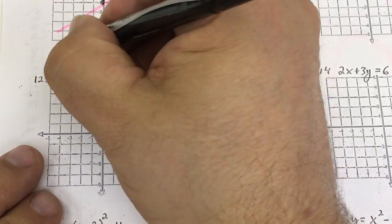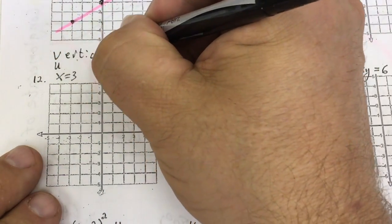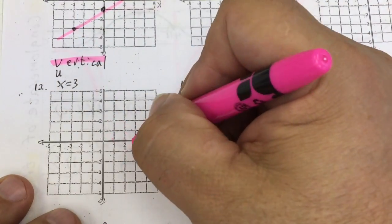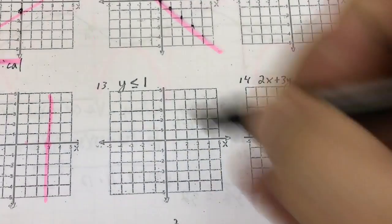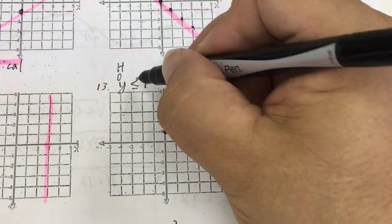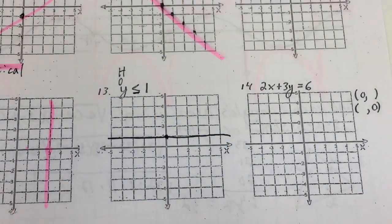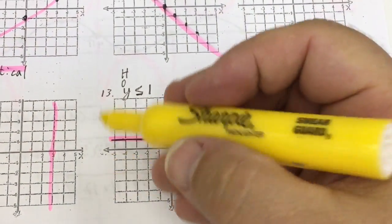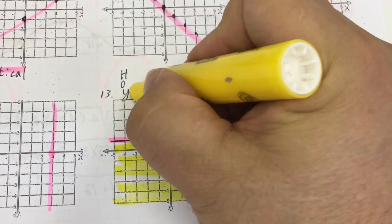X equals 3 — this is a VUX, a vertical line through x equals 3. This is a HOY, but it's an inequality: a horizontal line through y equals 1, solid line. Now I'm going to shade below the line, because the inequality says that.